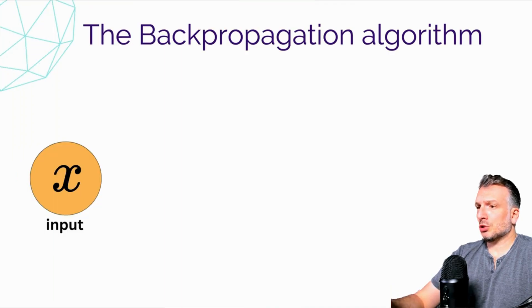The backpropagation algorithm is the heart of deep learning — that is the core reason why we can have advanced models like large language models. In a previous video, we saw that we can use a computational graph built as part of deep learning models to compute any derivatives of the network output with respect to the network inputs. Now we're going to see how we can use this computational graph to get the network to learn from the data.